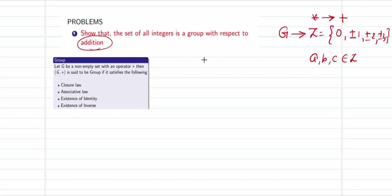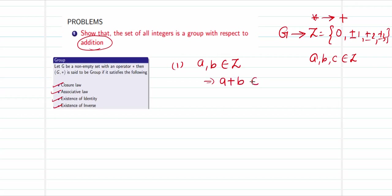To show that it is a group, I need to show that closure, associativity, existence of identity, and inverse are all going to be true. For closure: when I pick any two elements a and b that belong to the set of integers, I know that a plus b will again give me an integer. Therefore, the closure law is going to be true.